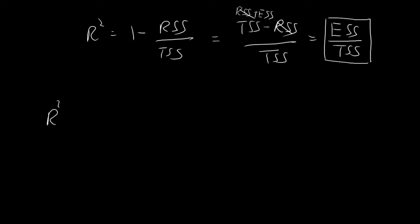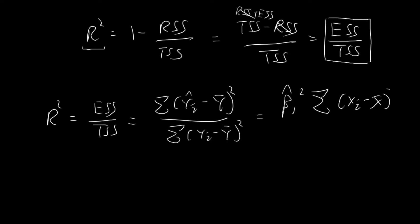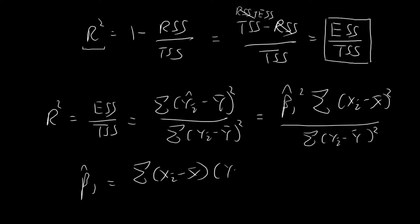One last thing I want to show is that you can actually connect the value of R-squared to the sample correlation. Starting from R-squared equals ESS/TSS, I'll apply the definition of ESS, which is the sum of (ŷᵢ minus the sample mean of y) squared, divided by the sum of (yᵢ minus the sample mean of y) squared. Using the alternative expression for ESS from a previous video, this becomes β₁-hat squared times the sum of (xᵢ minus the sample mean of x) squared, divided by the sum of (yᵢ minus the sample mean of y) squared. Then I'm going to apply the definition of β₁-hat, which is the sum of (xᵢ minus x̄)(yᵢ minus ȳ) divided by the sum of (xᵢ minus x̄) squared.